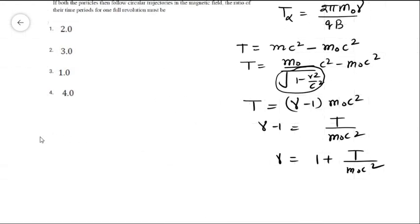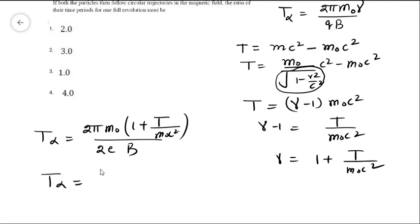Putting the value in the time period, T_alpha equals 2πM₀ times (1 plus T over M₀c²) over q, where q is the charge on the alpha particle which is 2e into B. So multiplying and dividing by c², it becomes 2π times (M₀c² plus T) divided by 2eBc². This is for the alpha particle.